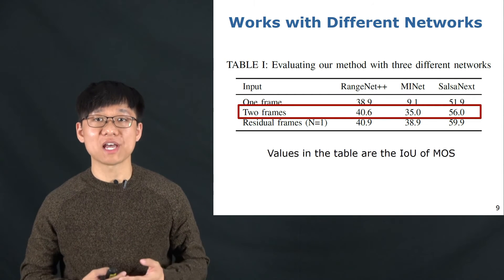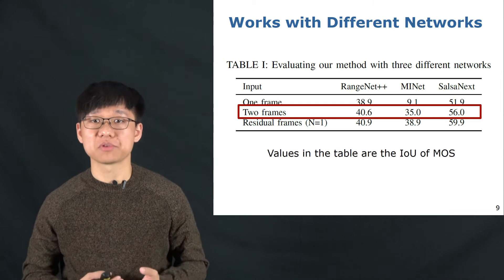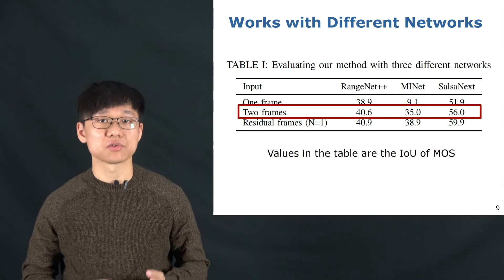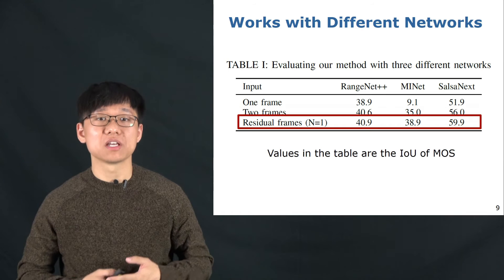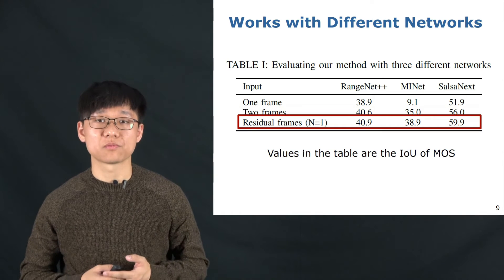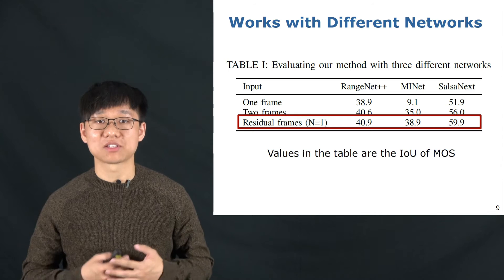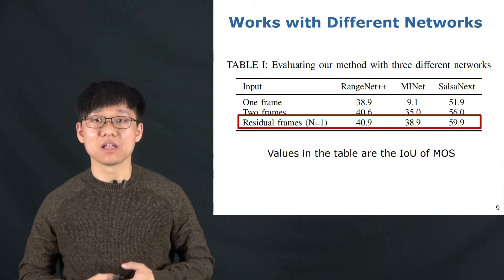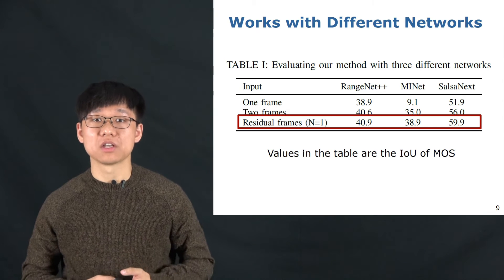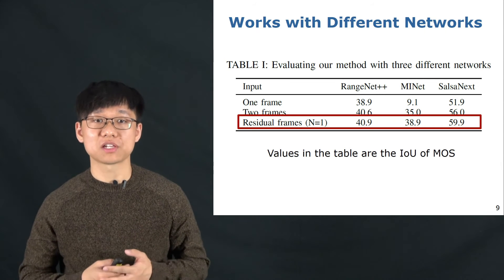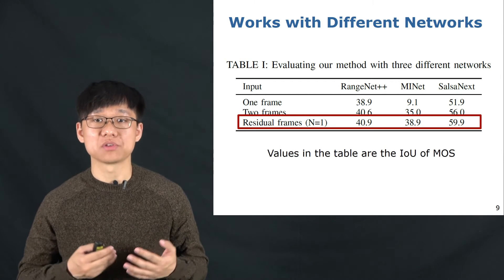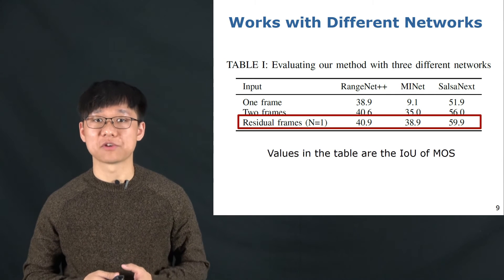The second setup is to attach the last frame to the current frame and use them as input to the neural network, also trained with the proposed binary labels. The third setup is to concatenate the proposed residual images to the current frame as the input to the neural network. The experimental results show that using the proposed residual images, all those networks get better performance in moving object segmentation, compared to using only one frame or directly attaching two frames.